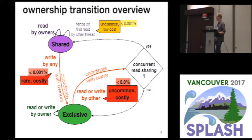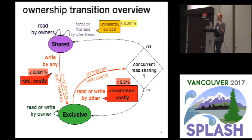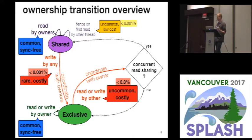This turns out to be pretty uncommon and relatively low cost compared to full coordination. Looking at the cost of coordination overall — it's quite expensive but also quite rare. In fact, across all of the programs we've observed, under 1% of all memory accesses involve this coordination, and for many programs it's quite significantly lower than that. All the rest of the memory accesses run their analysis completely free of synchronization overhead.